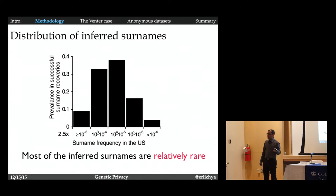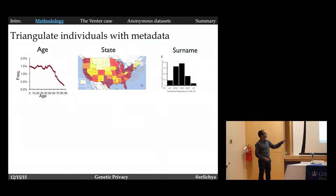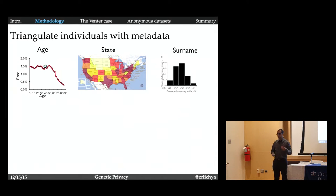But then you can ask and say, who cares? 40,000 individuals. Can you really get to a single individual? And the answer is yes. The trick is that I can combine other types of identifiers that are not protected by the HIPAA privacy rule. So age and state, for instance, are two identifiers that the HIPAA privacy rule says you can publish as part of your data set. They're not considered protected identifiers. So the question is, if I recovered the age, state, and the surname, how many people would match to such a profile?